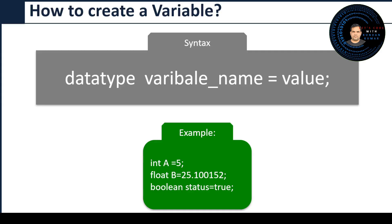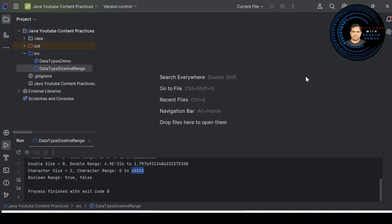When you create a variable, you reserve some space in memory — nothing but in RAM. So how do you create a variable? There is a general syntax: you start with the data type (please watch my previous video if you don't know data types — link is in the eye icon on the top right corner), followed by the variable name, assignment operator, and value.